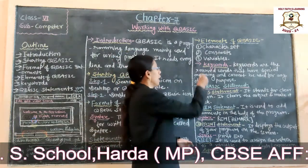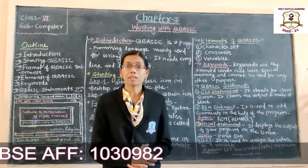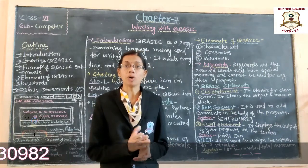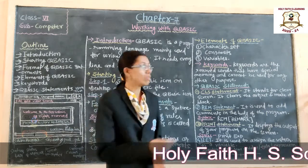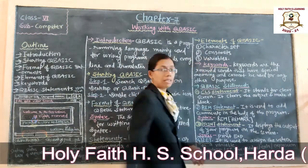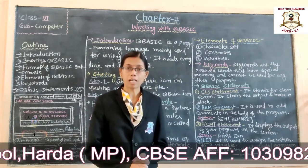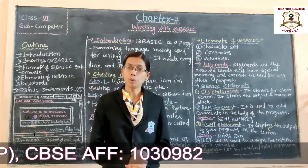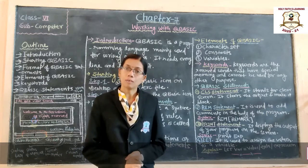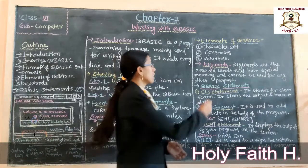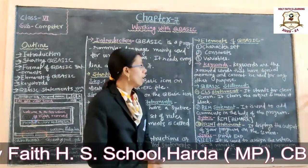Next is variables. Variables are values that can be changed according to our need during program execution. Variables are also of two types: numeric variables and alphanumeric variables. These are the three elements of Q-Basic.